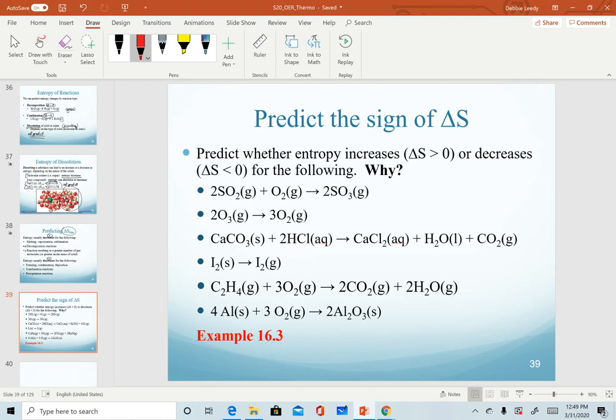So the first one we can look at our type of reaction. Notice in this one we have a combination reaction. And so since we're bringing molecules together, we predict that we would get more order in this one, more order or a decrease in disorder. We predict a negative. So you can either write a negative or you can indicate that delta S is predicted to be less than zero.